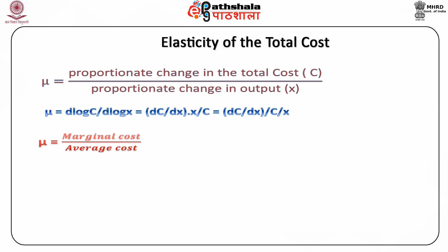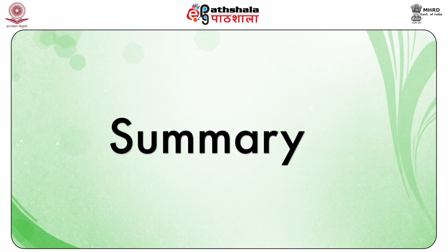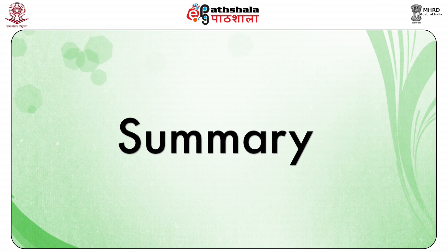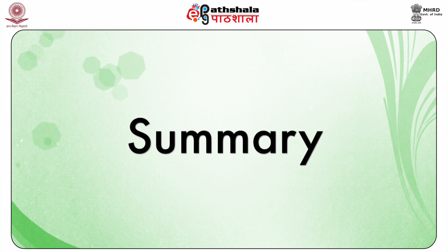Further, we can show that elasticity of AC equals mu minus 1, which can also be written as (MC minus AC) divided by AC. Let us now summarize the various concepts that we have learnt in this module.